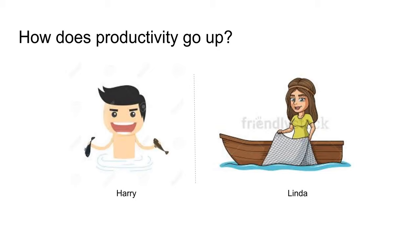Harry's descendants would still need to fish eight hours by hand. Linda's descendants, with boats and nets, might catch a week's worth of fish in one hour. This is how productivity grows across generations. The technical term for what Linda built is 'capital goods' — things owned not just for today but built for the future.